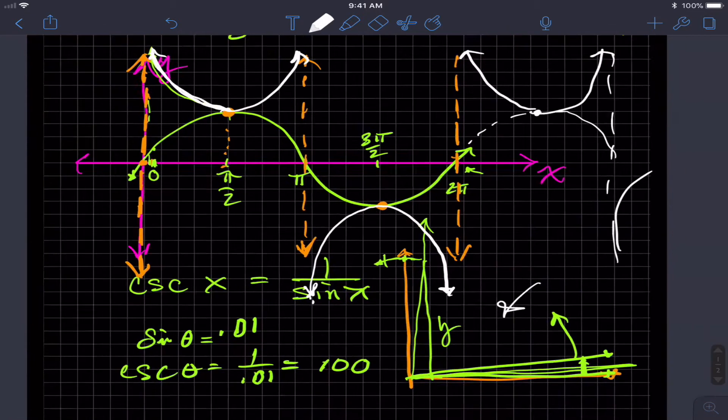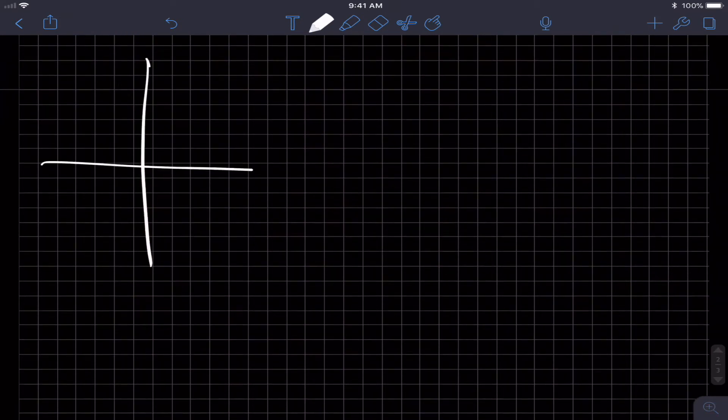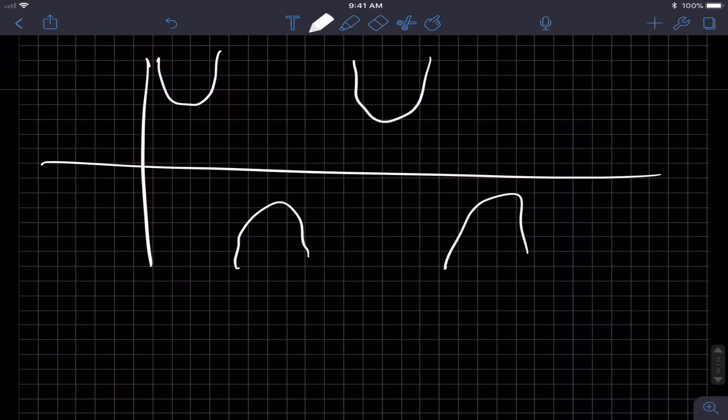So that's kind of why, an easy explanation, why the cosecant curve looks sort of like this. We get this bump and get this bump, we get this bump, we get this bump, we get this bump, and we have these asymptotes in between. And of course, there's one over here as well.